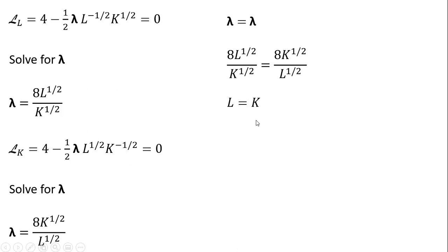We can plug this into the third partial derivative result, or the production function, where Q equals 100. Solving for K, K equals 100. And since L equals K, L equals 100. So that is the optimal input mix to minimize the total cost of producing 100 units of output.